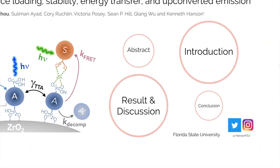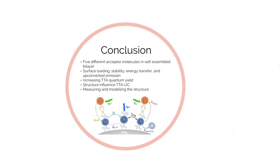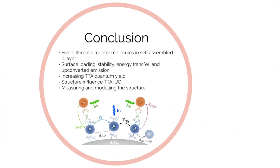In conclusion, we designed and synthesized five different acceptor molecules and incorporated them into self-assembled bilayers. We then studied the surface loading, stability, energy transfer, and upconverted emission. From the results, we found that, firstly, increasing the triplet-triplet annihilation quantum yield is the key factor in lowering the I-th value and increasing the upconversion quantum yield in the bilayers.